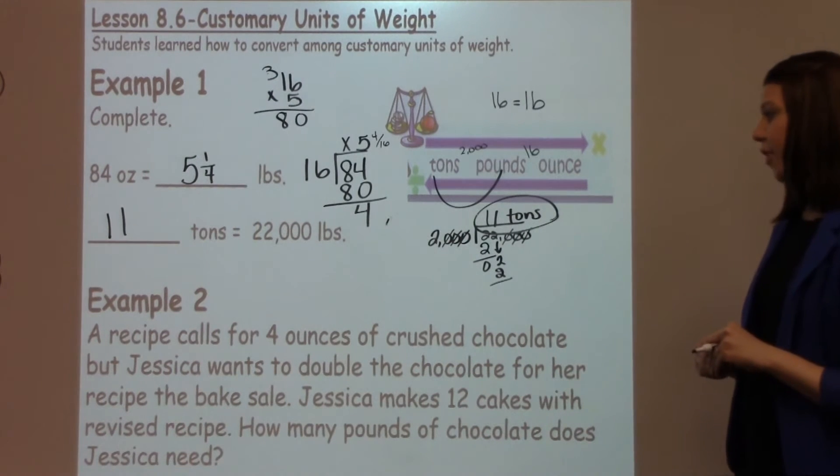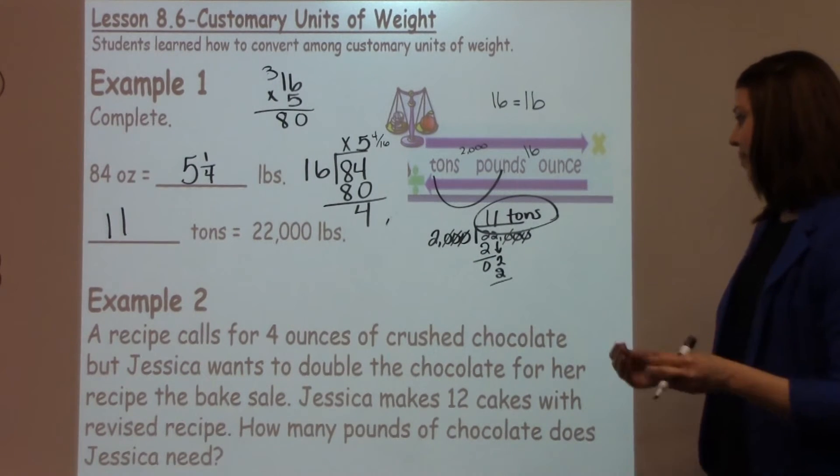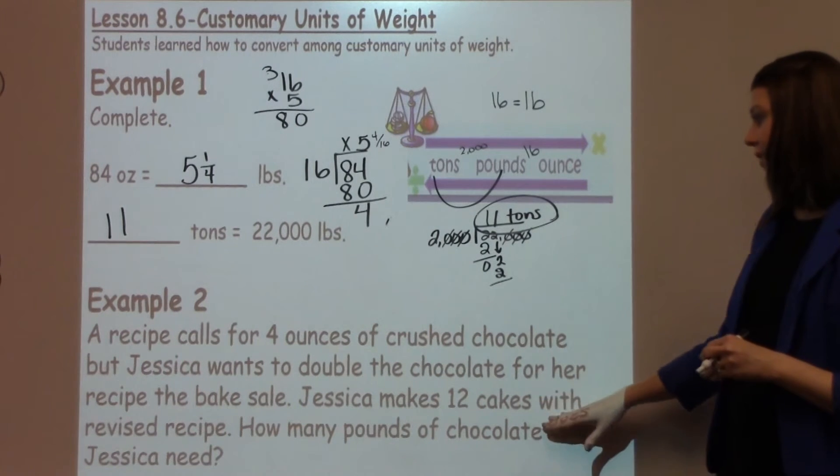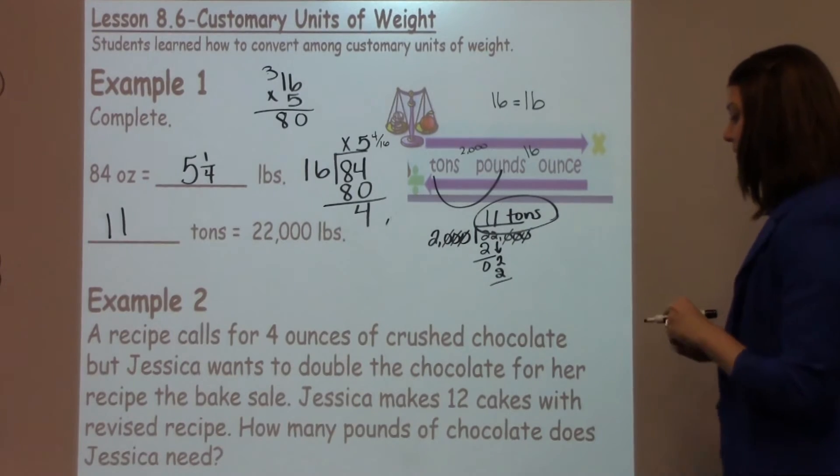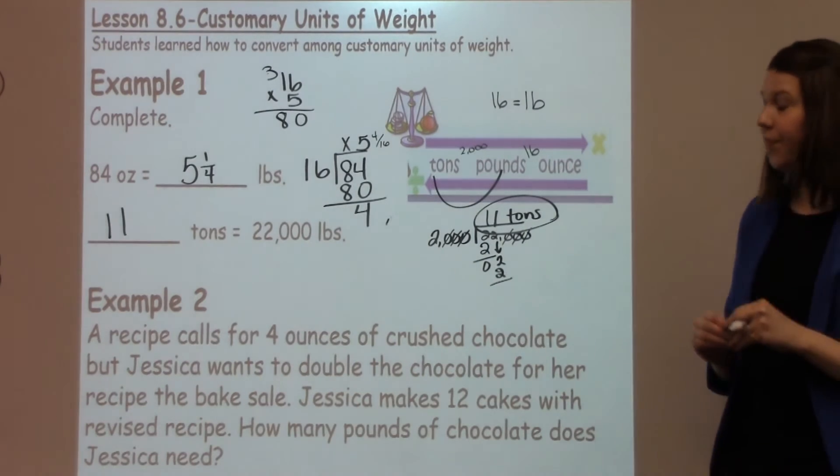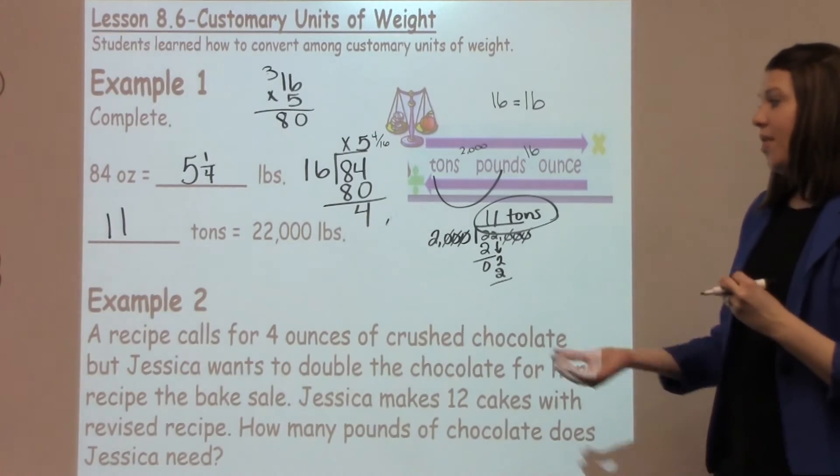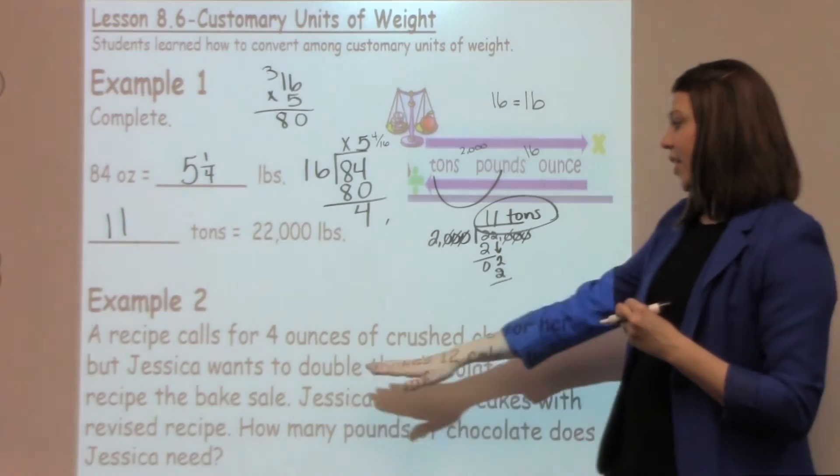Example number 2: A recipe calls for 4 ounces of crushed chocolate, but Jessica wants to double the chocolate for her recipe for the bake sale. Jessica makes 12 cakes with the revised recipe. How many pounds of chocolate does Jessica need? Again, this problem has a lot of things going on. One of the very first things I'm going to look at is this very first sentence.